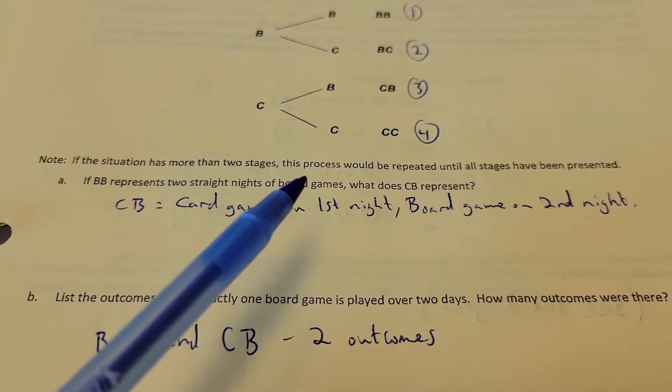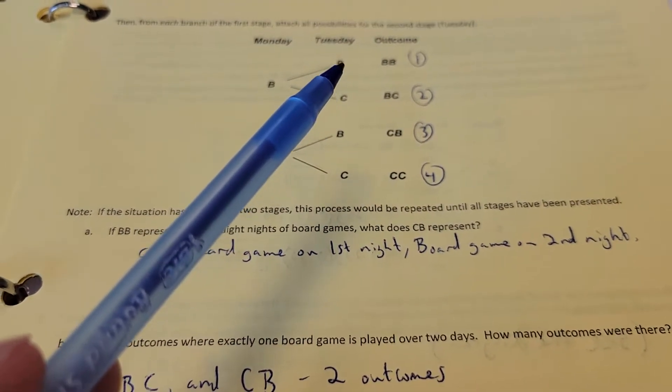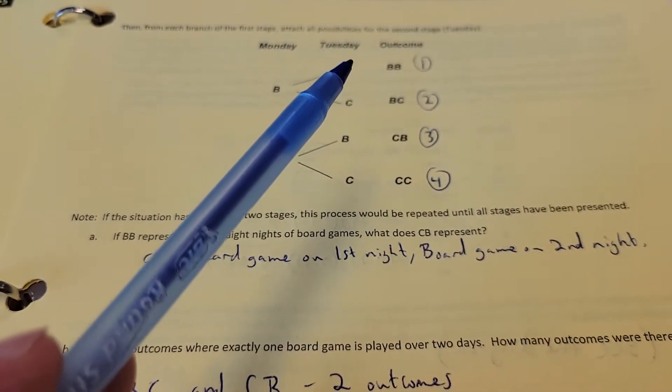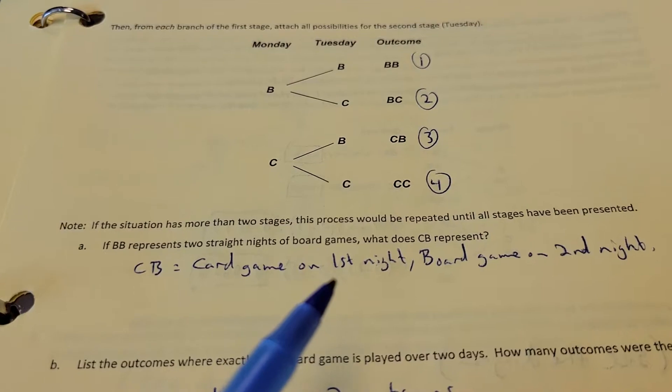If the situation had more than two stages, the process would be repeated until all stages have been presented. So if I had to go on Wednesday, I'd branch off from the B and go B, C. I'd branch off from the C and go B, C, and so on. I'd keep branching off from everything from Tuesday.